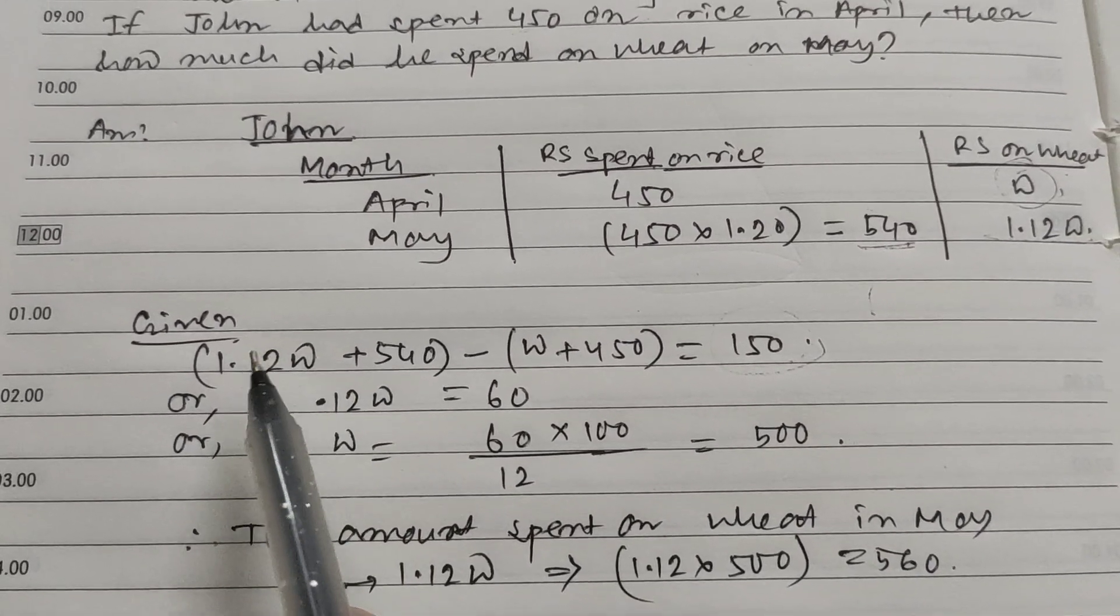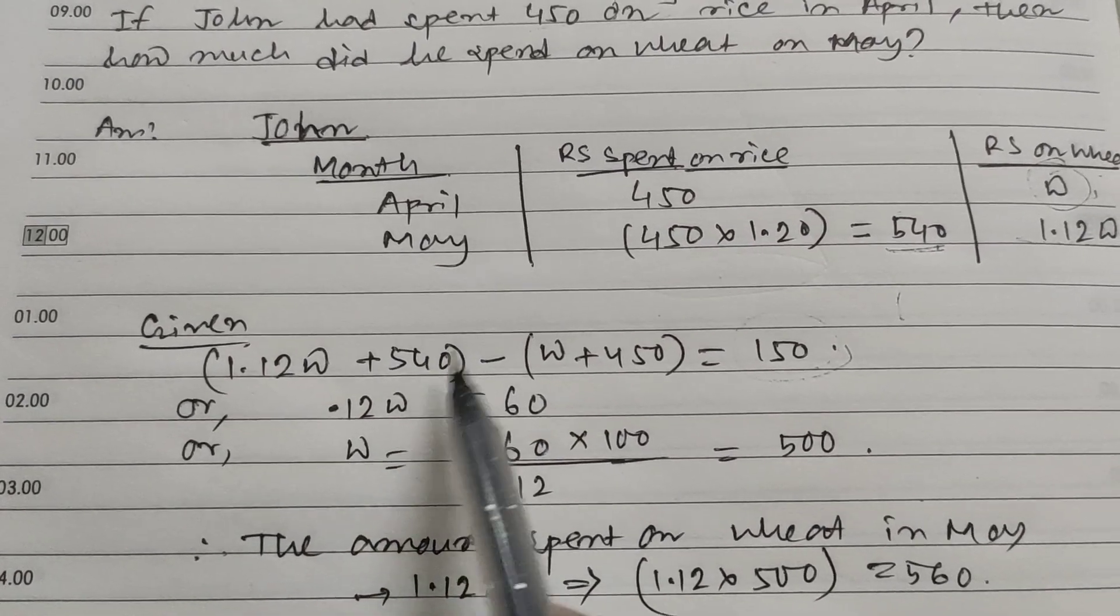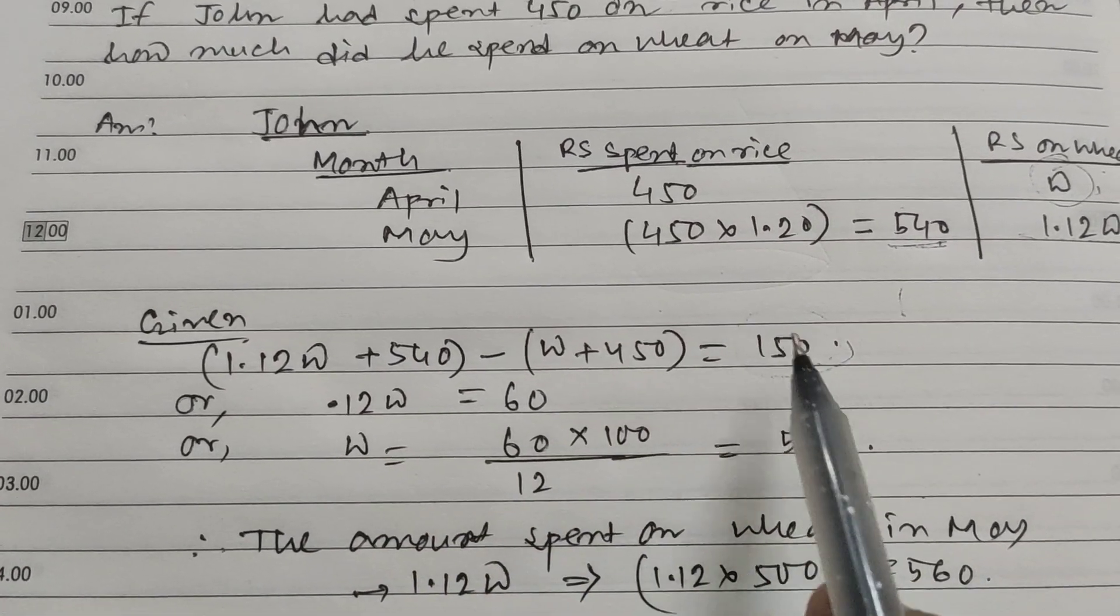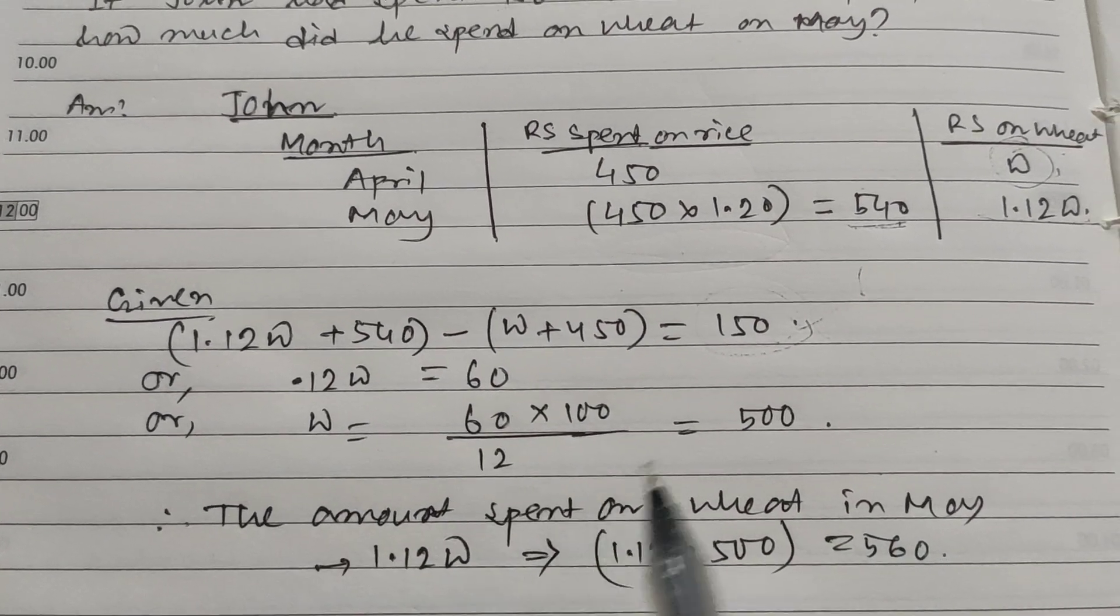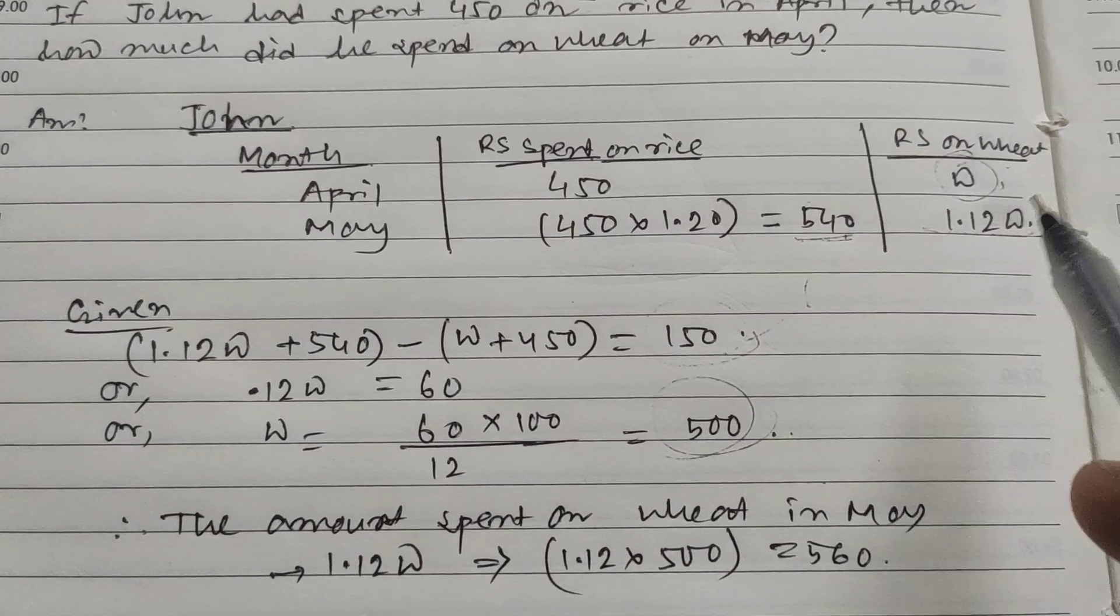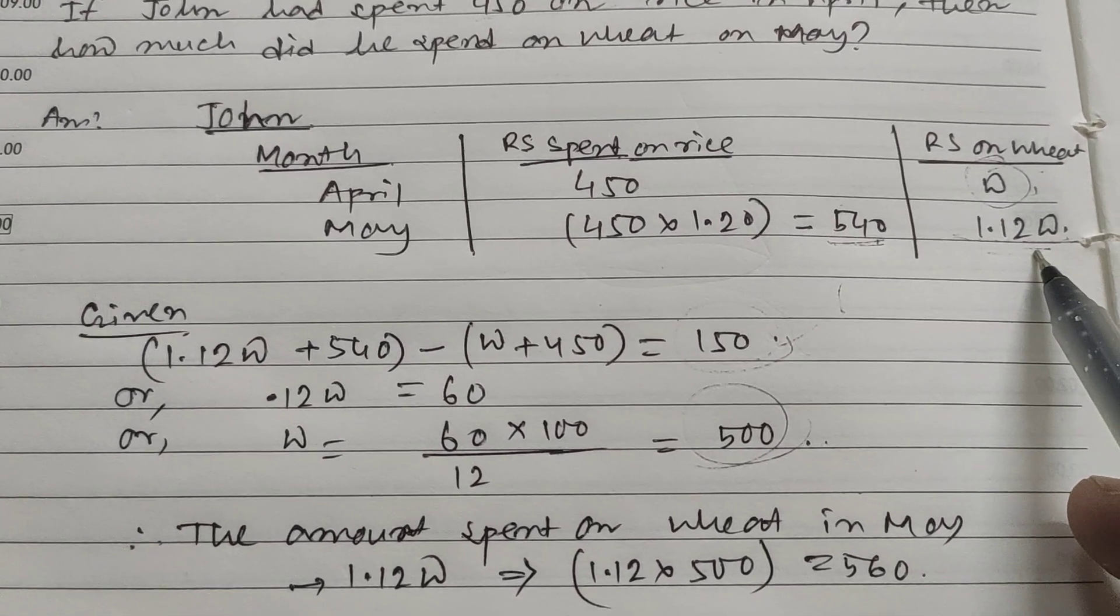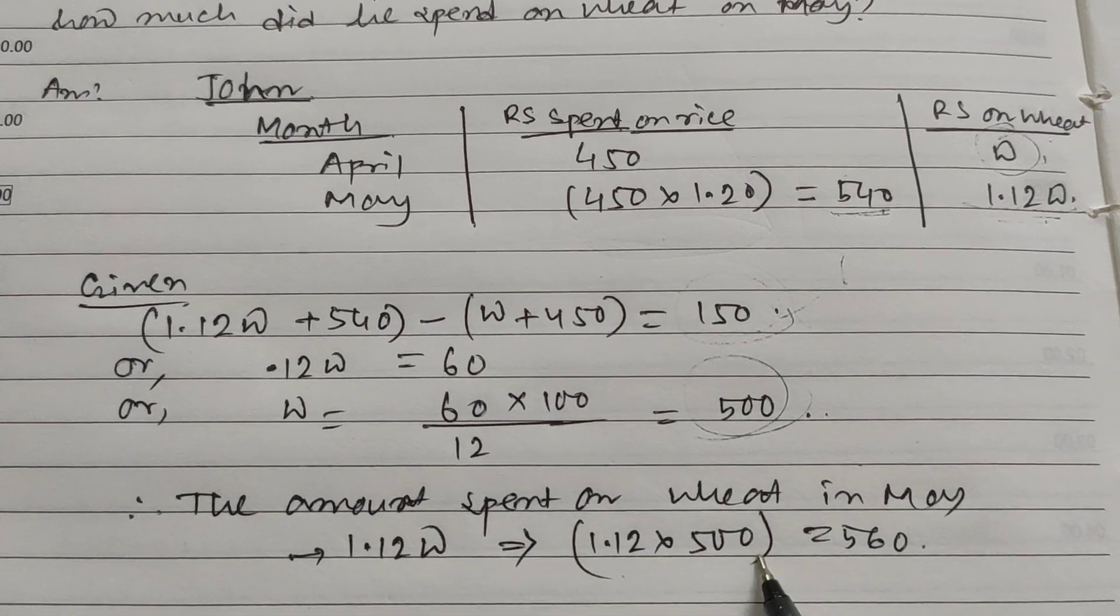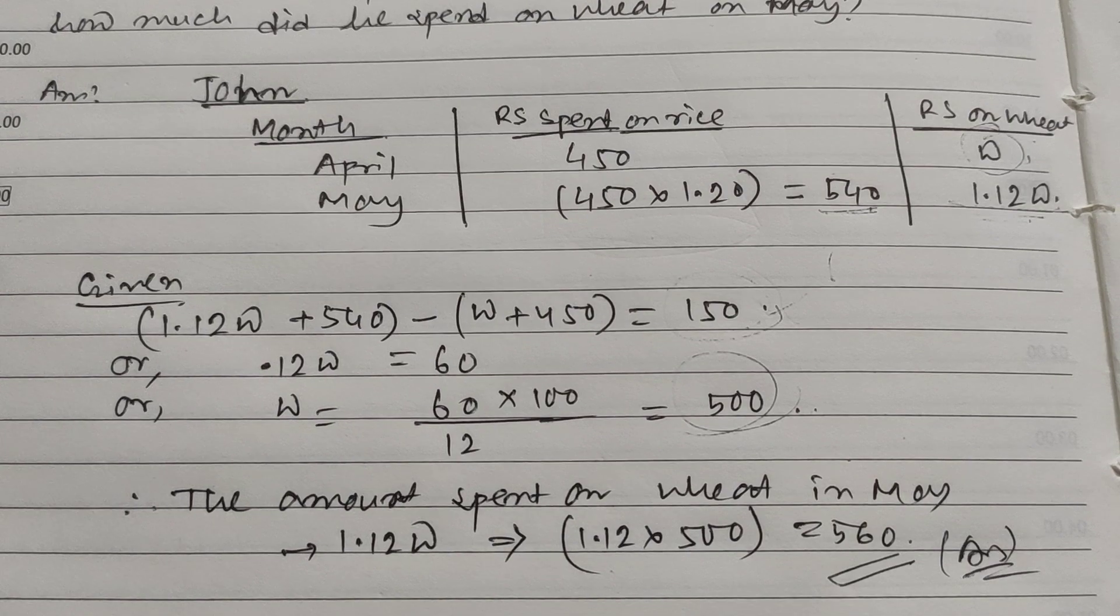So 1.12 minus 1 gives 0.12w, and 540 minus 450 is 90. Then 150 minus 90 is 60, so w equals 500. The amount spent on wheat in May is 1.12w, which is 1.12 times 500, equals 560. Therefore, 560 is the answer.